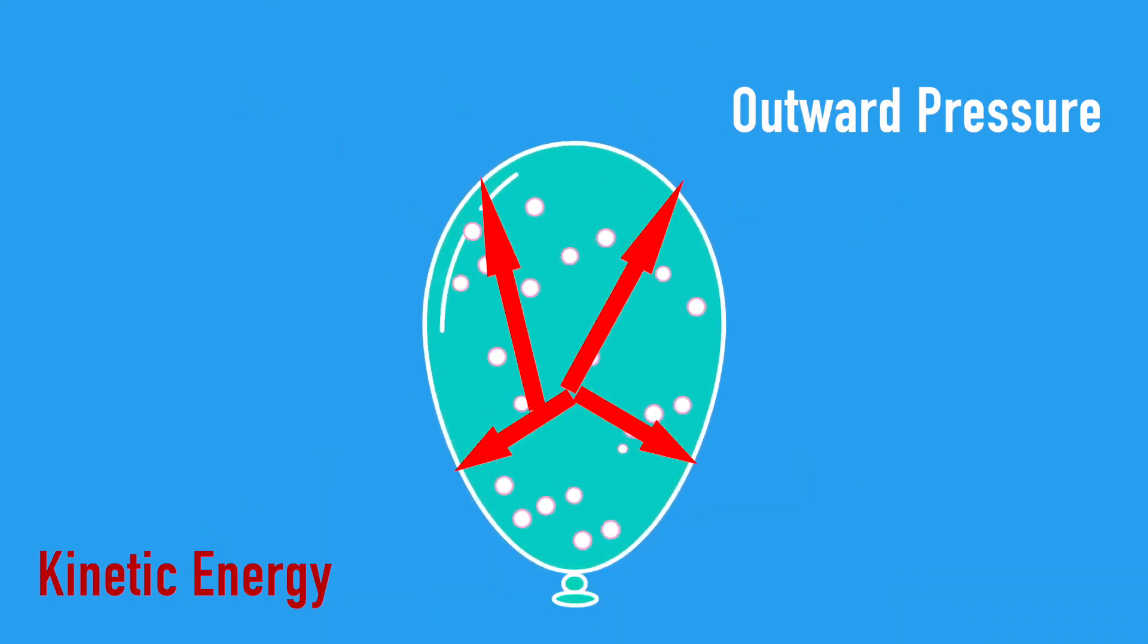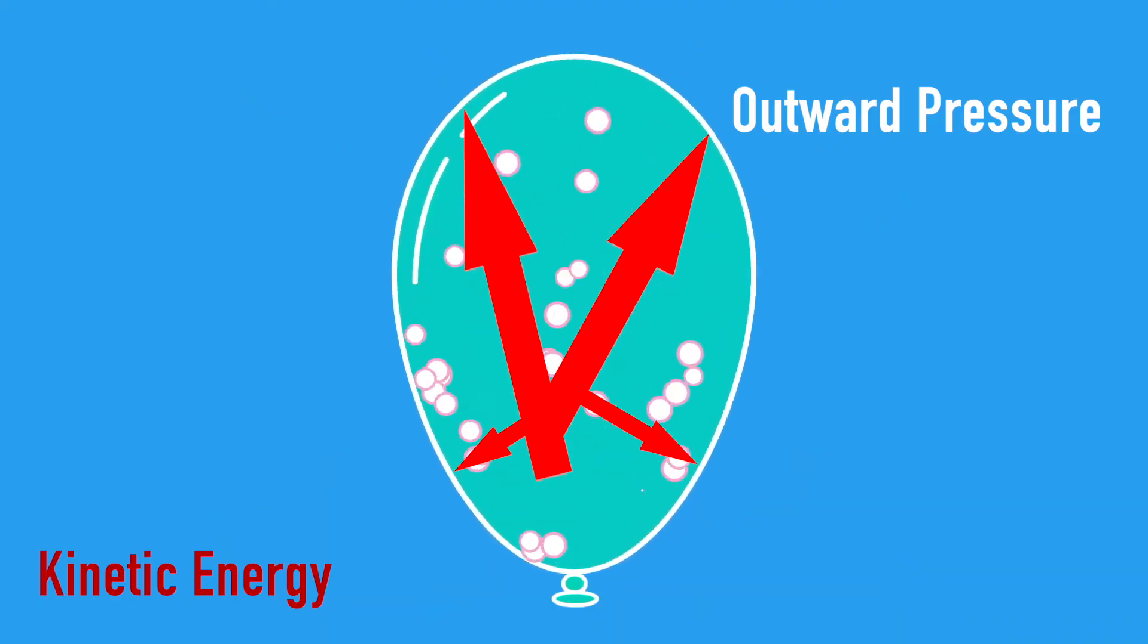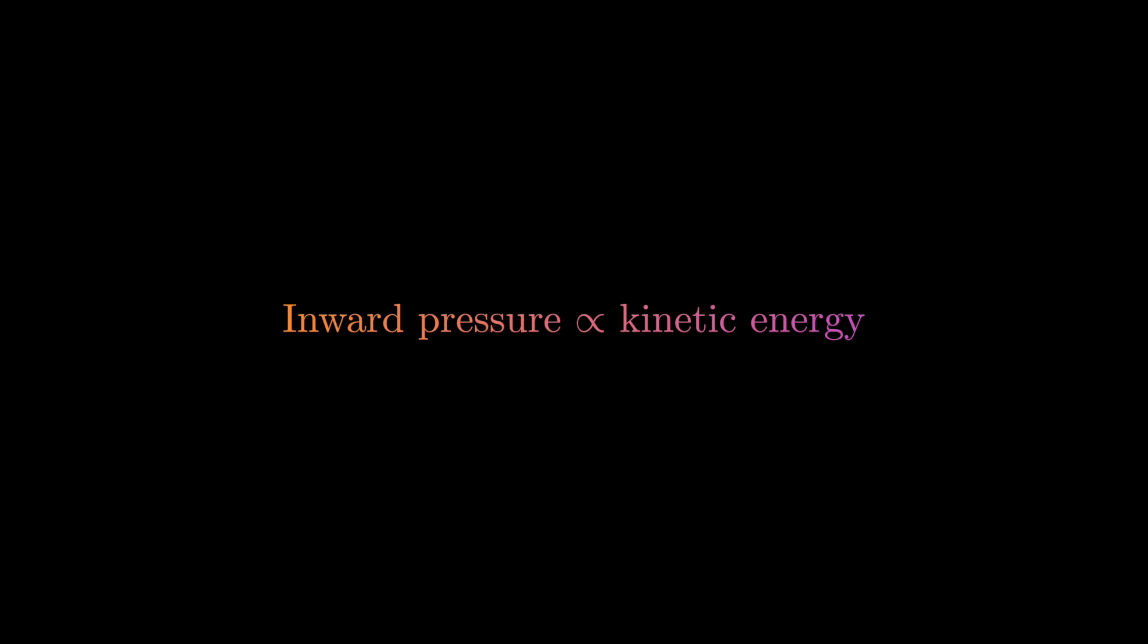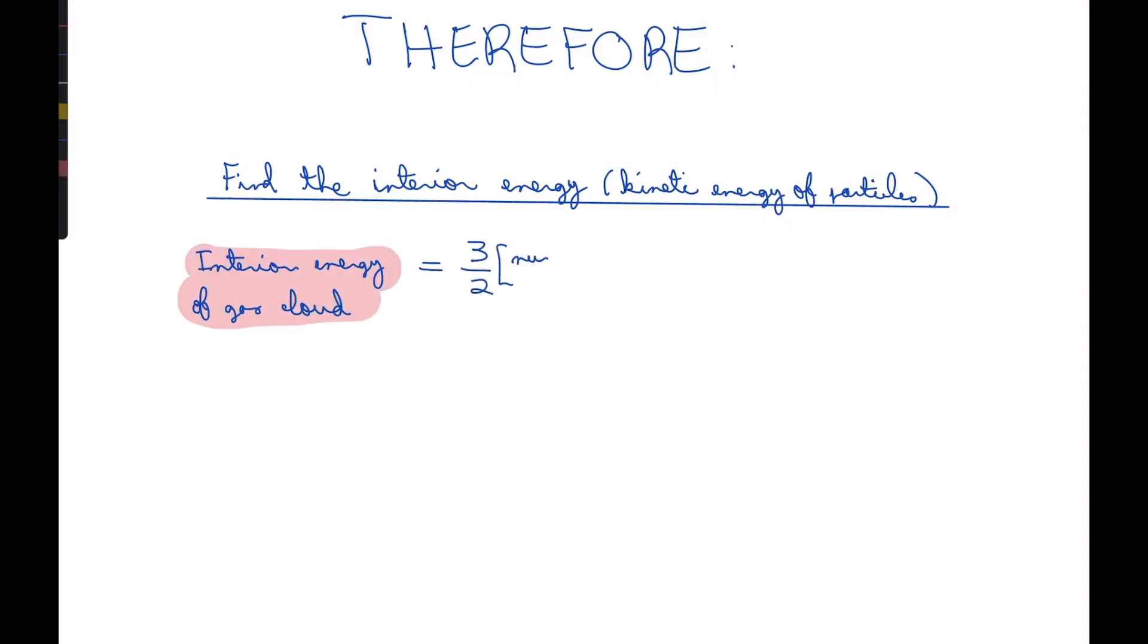The amount of kinetic energy in the system creates the outward pressure, meaning that the inward pressure is proportional to the kinetic energy of the gas particles. Using X-ray telescopes, we can find the temperature of this gas.